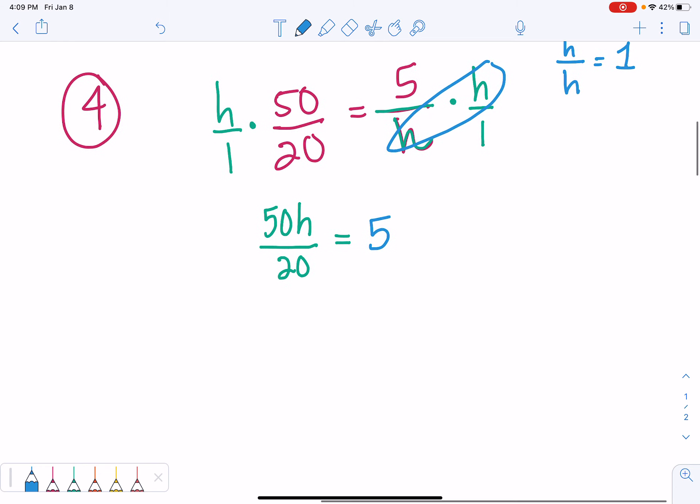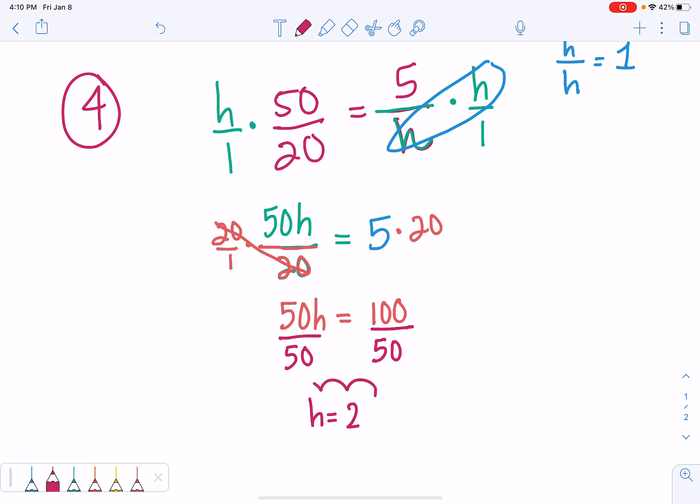And now, we need to continue to undo to solve for h. So, we're dividing by 20. So, to undo, we will multiply by 20. 20 divided by 20 equals 1. 50h equals 5 times 20, which is 100. Then we will do our last step. Divide by 50 on both sides. Get h equals 2.